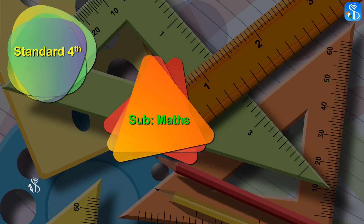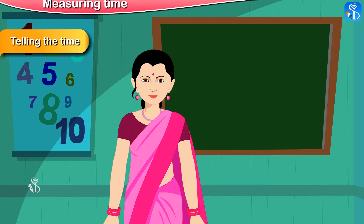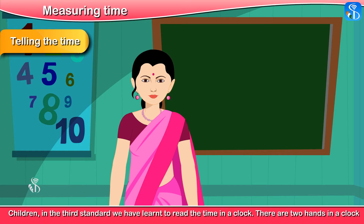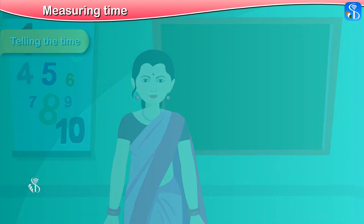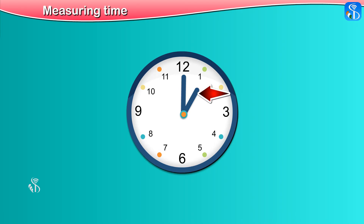Third standard maths, Chapter 8: Measuring Time — Telling the Time. Children, in the third standard we have learned to read the time on a clock. There are two hands in a clock: a small hand and a big hand.